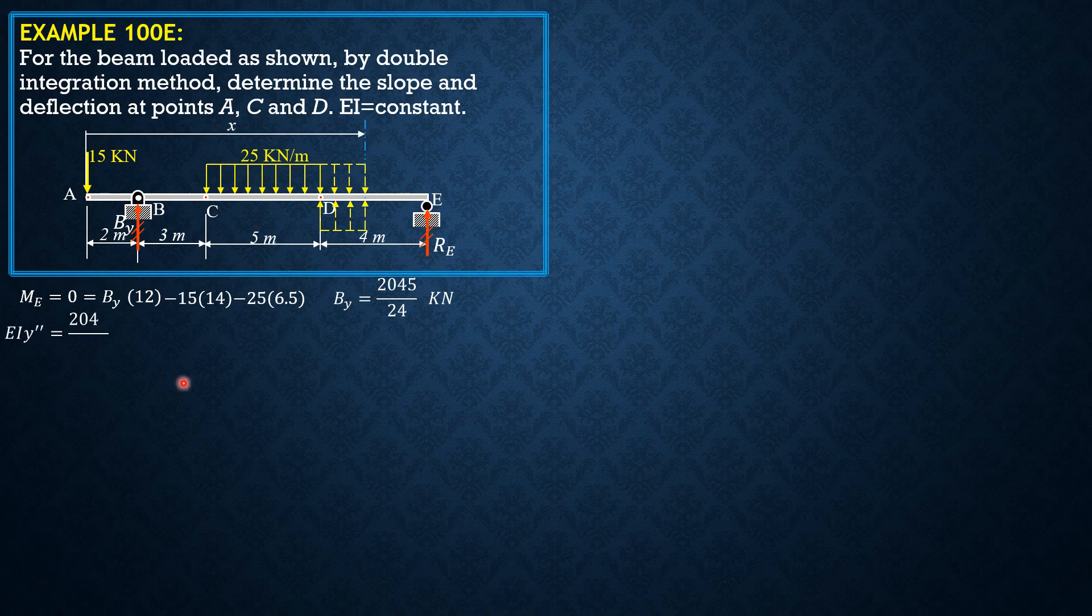So EI Y double prime equals 2045 over 24 times (X minus 2), minus 15X, plus the upward loading 12.5(X minus 10) squared, and minus the moment of this loading 12.5(X minus 5) squared.